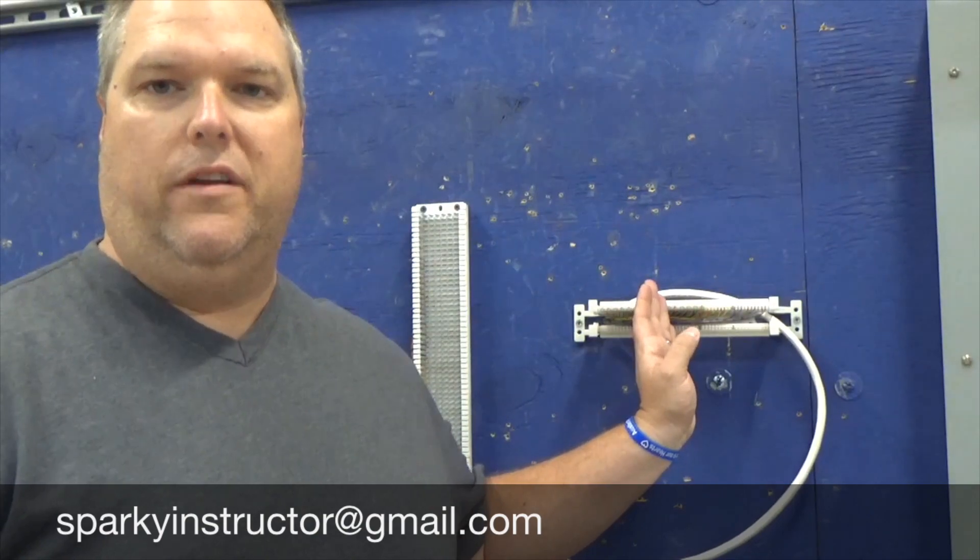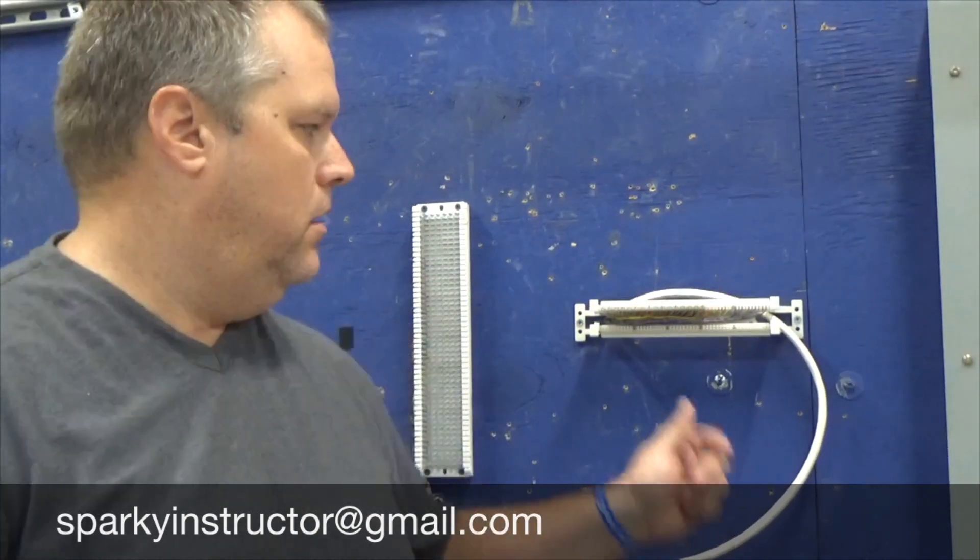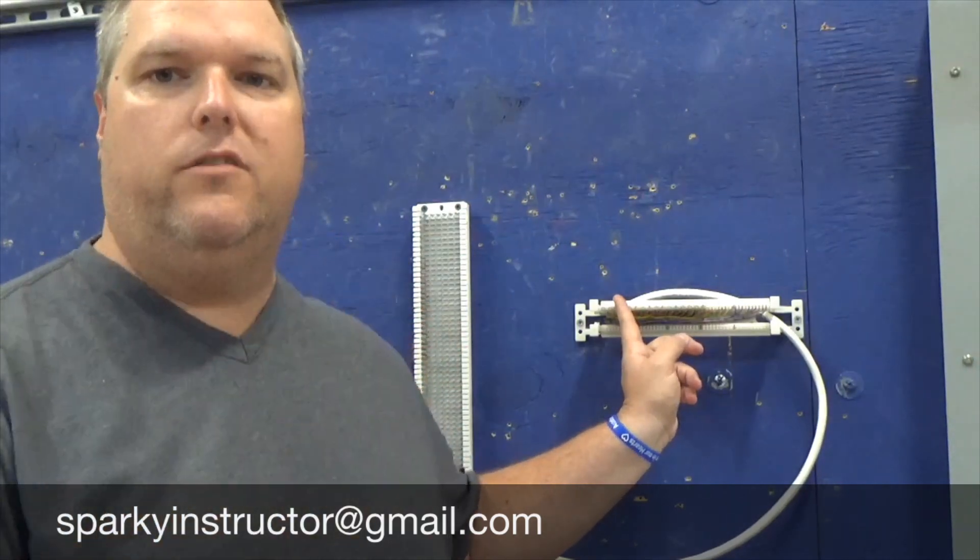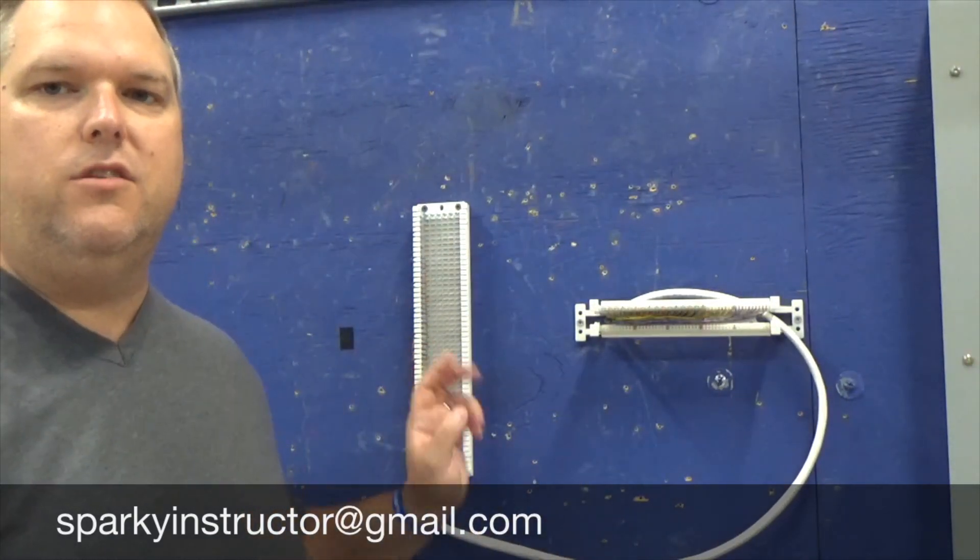So that's pretty much it. This is how we punch down a 110 block with the 25 pair, with the color code that we learned in the last video. C4's, meaning we have four pairs or eight conductors. We punch those down and then we can use those for cross connecting or adding conductors, whatever we need to do, whether it be jacks, phone connections, whatever it may be. 110 block is nice and easy to work with. 66 is also nice and easy to work with, takes a little bit of time to get used to, but once you get used to it, they're very easy to knock down.